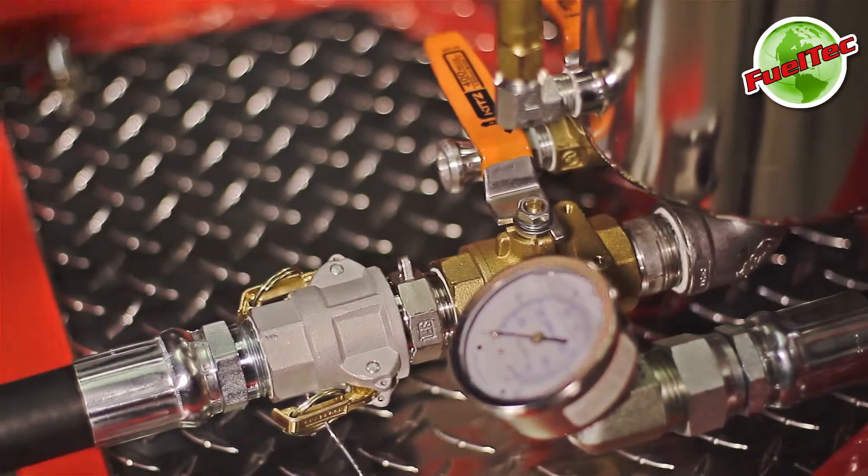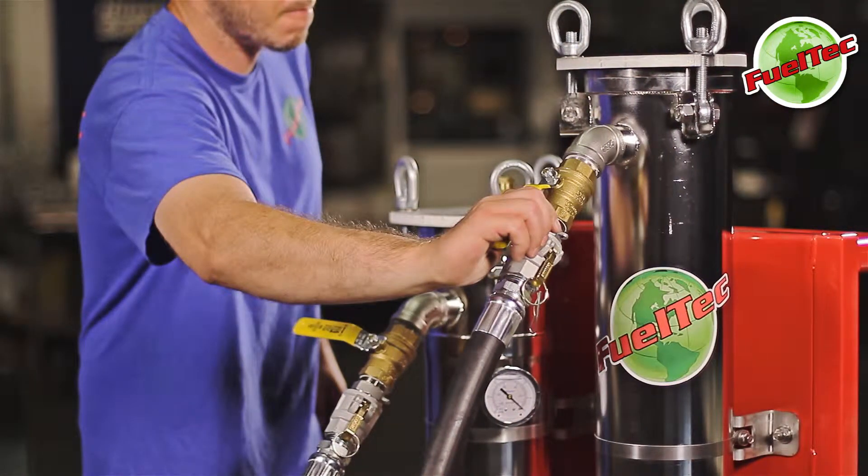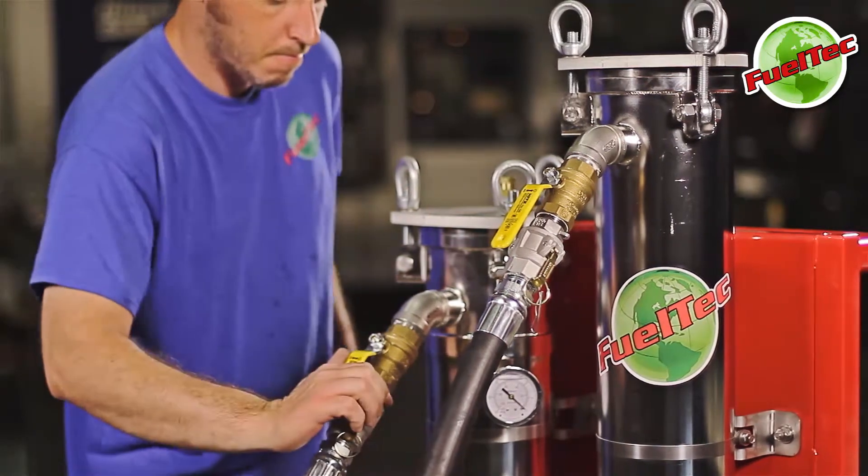Set the selector valve to the separate water position. Open the dry fuel return to tank valve on top of the water separator. Open the primary filter inlet valve.